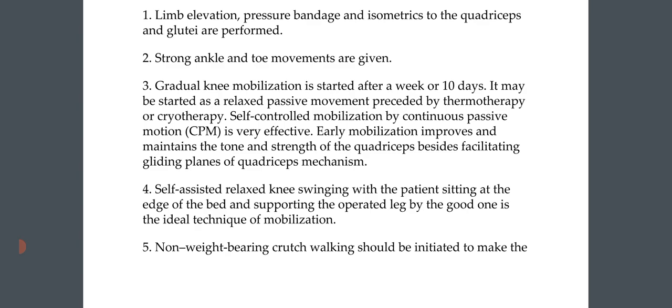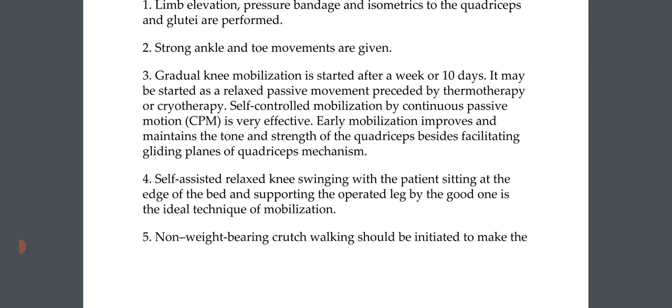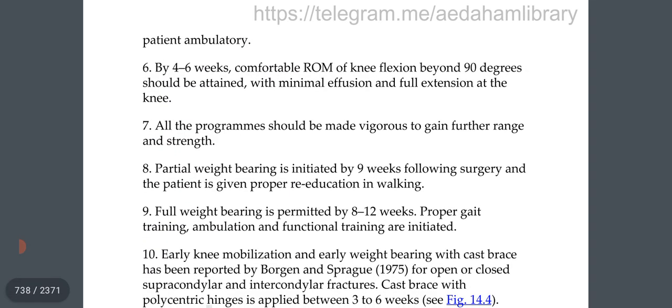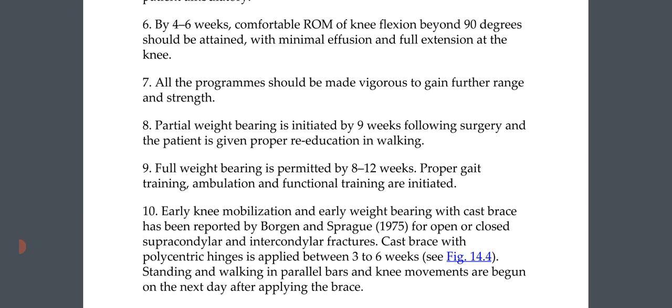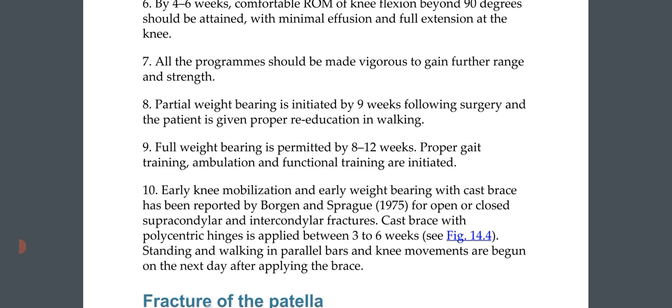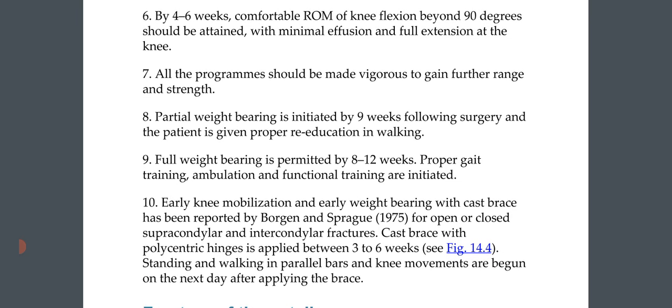Early mobilization maintains the tone and strength of the quadriceps and facilitates gliding of the quadriceps mechanism. Self-assisted relaxed knee swinging with the patient sitting at the edge of the bed is an ideal mobilization technique. Non-weight-bearing crutch walking should be initiated. By four to six weeks, comfortable range of knee flexion beyond 90 degrees should be attained with minimal effusion and full extension. Partial weight-bearing is initiated by nine weeks and full weight-bearing is permitted by 8 to 12 weeks.